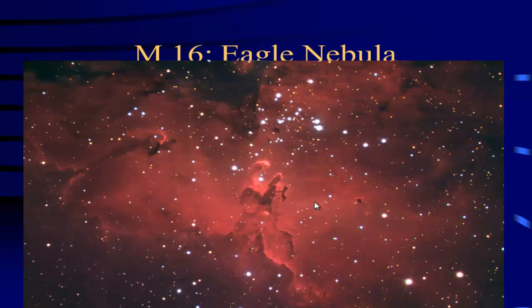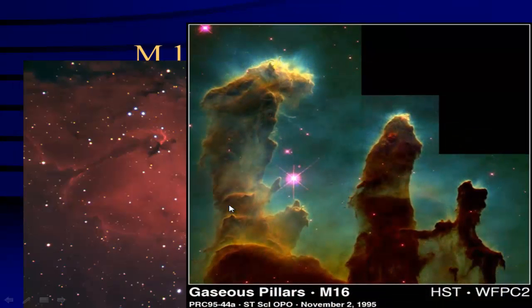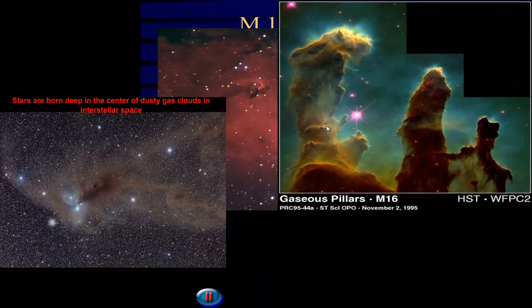Or we have M16, which is known as the Eagle Nebula. Eagle Nebula is kind of cool because if we look at the talon, these are known as the Pillars of Creation - very cool pictures from the Hubble Space Telescope. We start out as a big cloud of gas and dust.